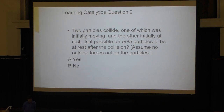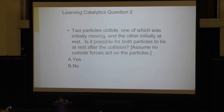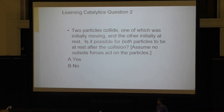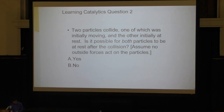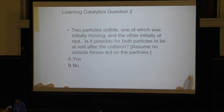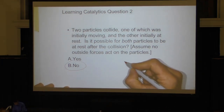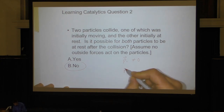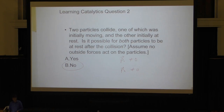Two particles collide — one was initially moving, the other initially at rest — out in space with no gravity. Is it possible for both particles to be at rest after the collision? No, because there was some initial momentum. P_initial total is not equal to zero, so P_final cannot be equal to zero either. At least one of them has to be moving — they can't both stop.